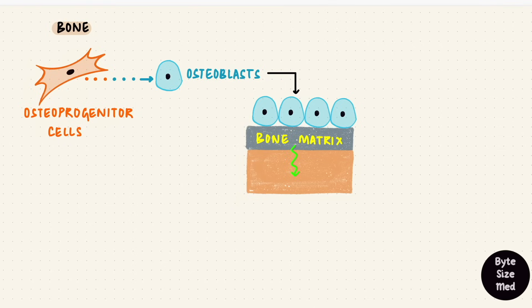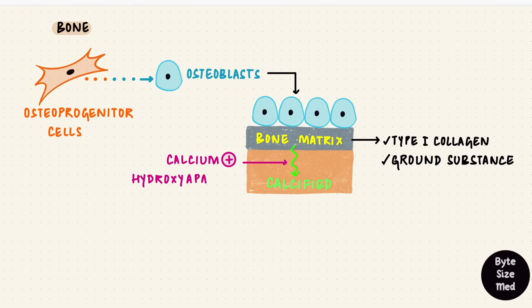Bone, on the other hand, has osteoblasts, which develop from mesenchymal stem cells called osteoprogenitor cells. These synthesize the bone matrix, which is then calcified. It has type 1 collagen and ground substance, which gets mineralized with the addition of ions like calcium hydroxyapatite to form the calcified bone matrix.